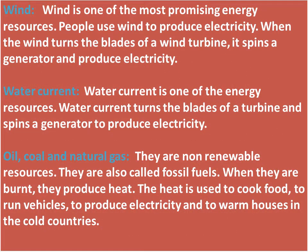Wind: Wind is one of the most promising energy resources. People use wind to produce electricity. When the wind turns the plates of a wind turbine, it spins a generator and produces electricity.